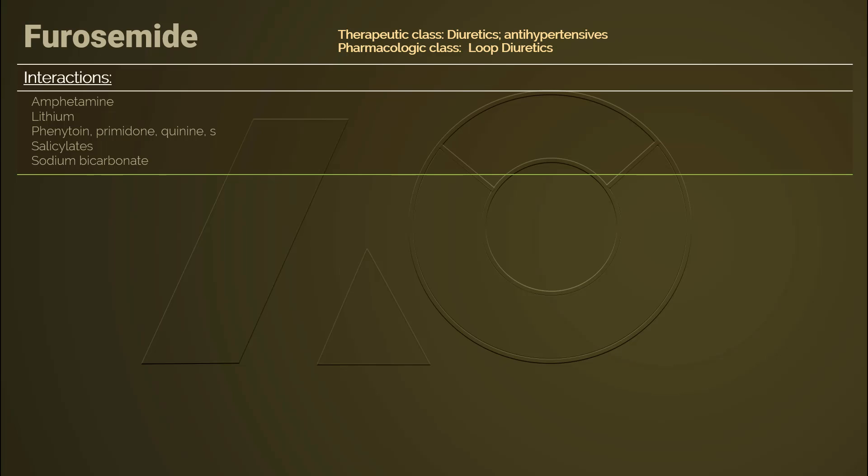As the urine pH is increased by acetazolamide, clearance of amphetamines is decreased. In addition, acetazolamide can decrease the clearance of phenytoin, primidone, and quinidine, leading to toxicity of these medications. Acetazolamide can also increase the risk of salicylate toxicity. When a patient uses acetazolamide and lithium together, there is a risk of decreasing the effect of lithium because acetazolamide can promote clearance of lithium. Using acetazolamide and sodium bicarbonate together can increase the risk of kidney stones.